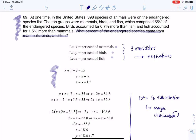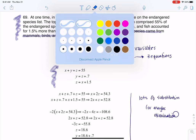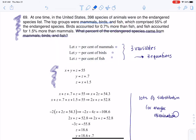So let's take a look at what we have. It's saying at one time there were 398 species of animals that were endangered. The top groups were mammals, birds, and fish which comprise 55 percent of the endangered species. So let me just change colors here. We know that mammals, fish, and birds comprise 55 percent of that 398 number, but since I'm being asked to solve for percentages I'm going to keep it as percentages.